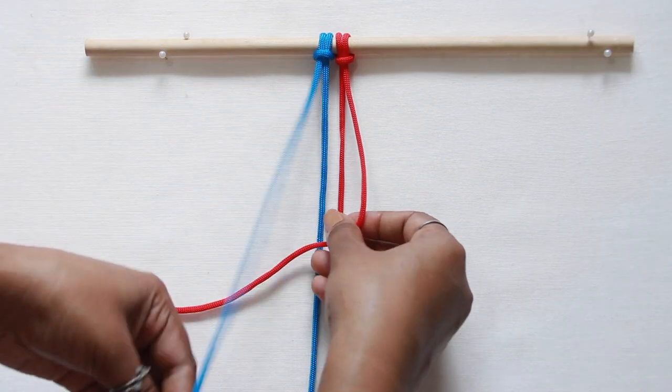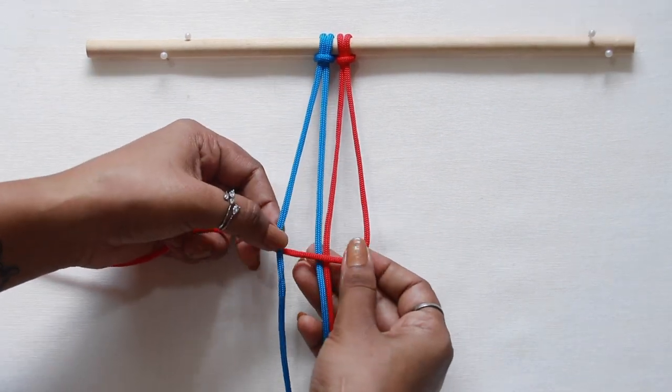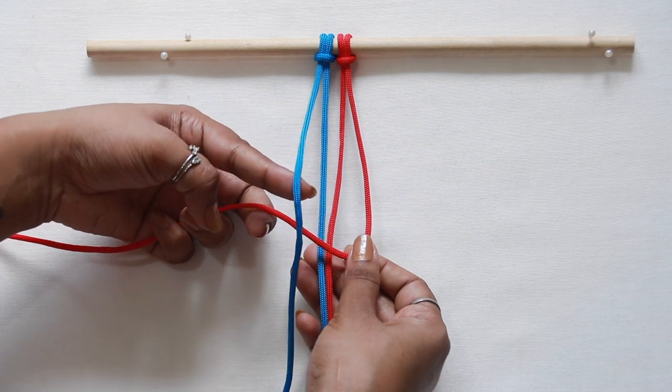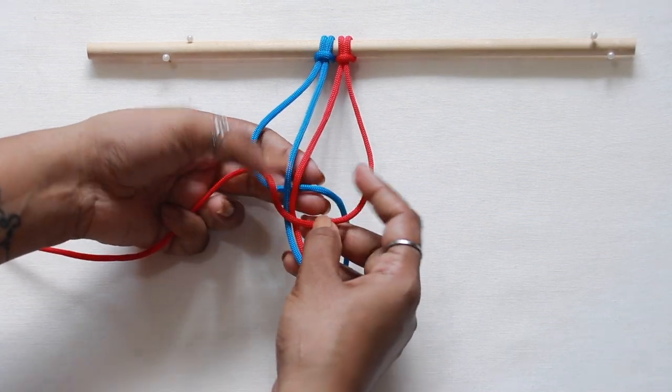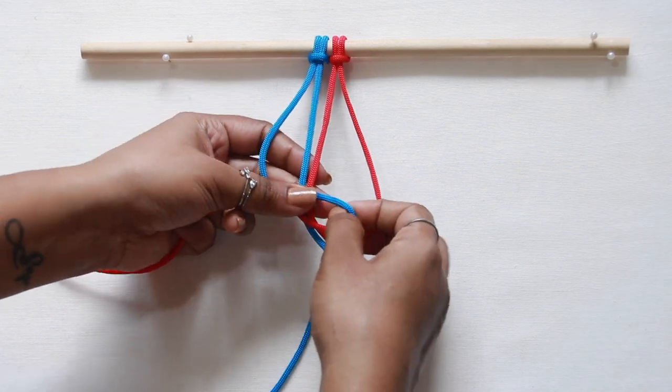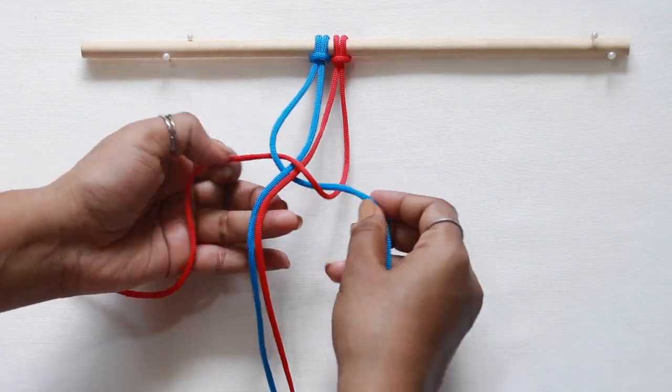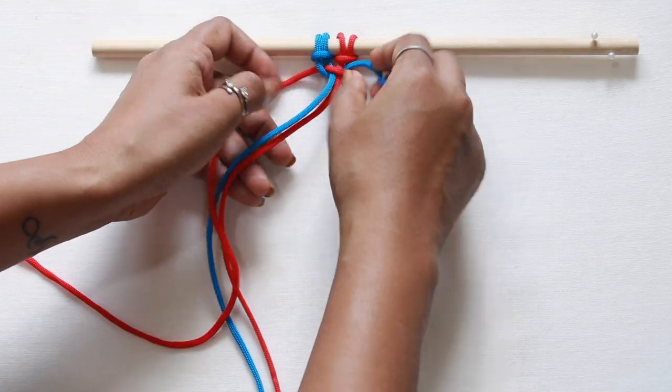Take the left working cord and go over the tail of 4. Pass underneath the 2 middle filler cords held together, then out through the loop of 4 formed on the right side. Pull them up tight and secure together.